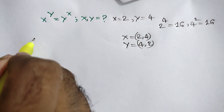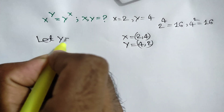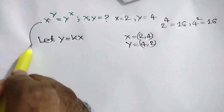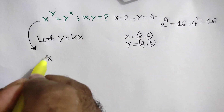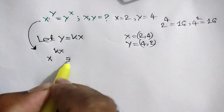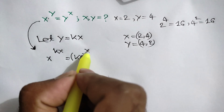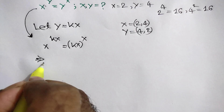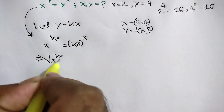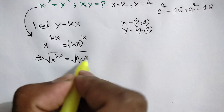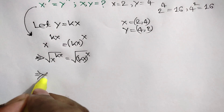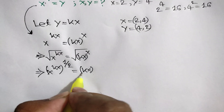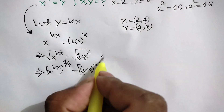Now let y be equal to kx, where k is a constant. So we will get x to the power y — that means x to the power kx — is equal to y, which is kx, whole to the power x. Now taking square root on both sides, we can write square root of x to the power kx is equal to square root of kx whole to the power x. So x to the power kx whole to the power one-half is equal to kx to the power x whole to the power one-half.